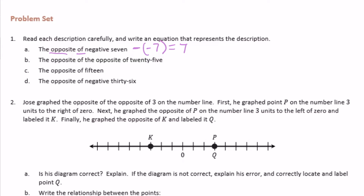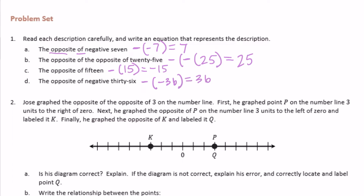B: the opposite of the opposite of 25. The opposite of the opposite of 25 would be equal to 25, because there are two negatives and they cancel each other out. C: the opposite of 15 — there's only one negative, so nothing cancels, and that equals negative 15. And lastly, the opposite of negative 36 would be equal to 36, because the two negatives cancel each other out and become positive.